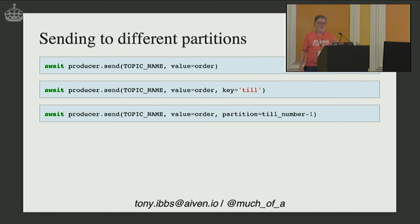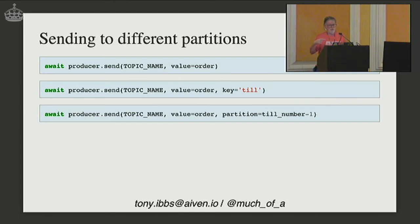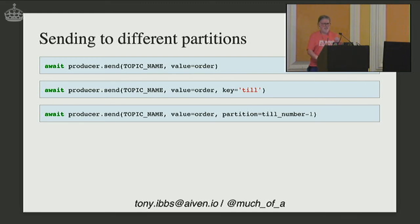To send to different partitions, I have three ways: send as before using the default — meant to be round-robin but Kafka Python docs say that's not great; specify a key, such as the till number, which gets hashed to choose the partition; or explicitly specify a partition using till number minus one, since tills are 1, 2, 3 and partitions are 0, 1, 2. For reasons I don't fully understand, only the explicit partition approach worked in my demo — apparently something to do with sticky partitions, which is my homework after the conference.